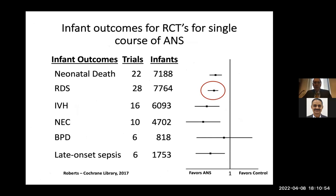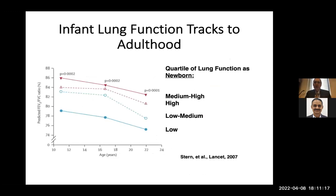These are outcome studies — the meta-analysis of Roberts for antenatal steroids — and they're quite compelling. They decrease death, they decrease RDS, they decrease NEC, IVH, and late-onset sepsis. So there are compelling reasons why we should use antenatal steroids, but what I'm going to tell you is that I think we've been using the wrong drug at the wrong dose.